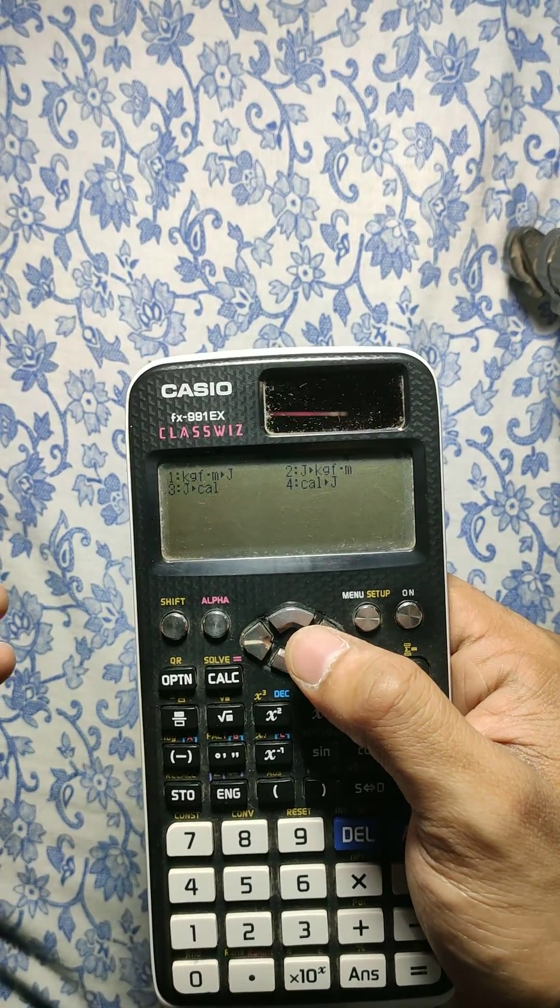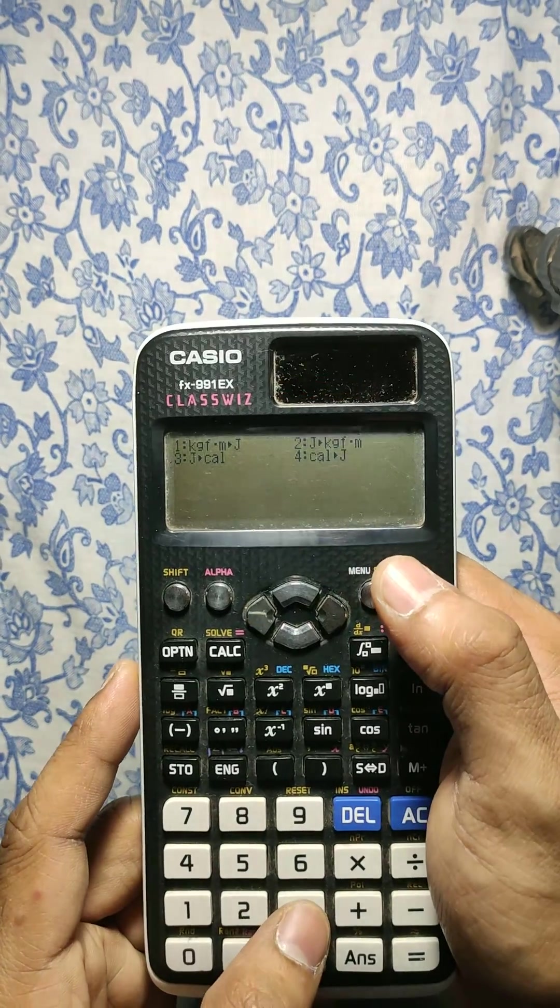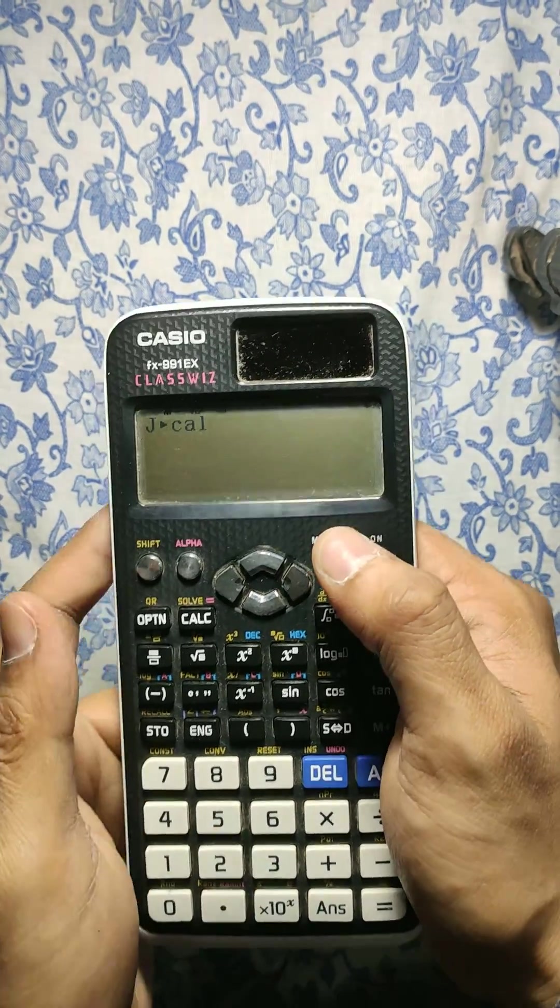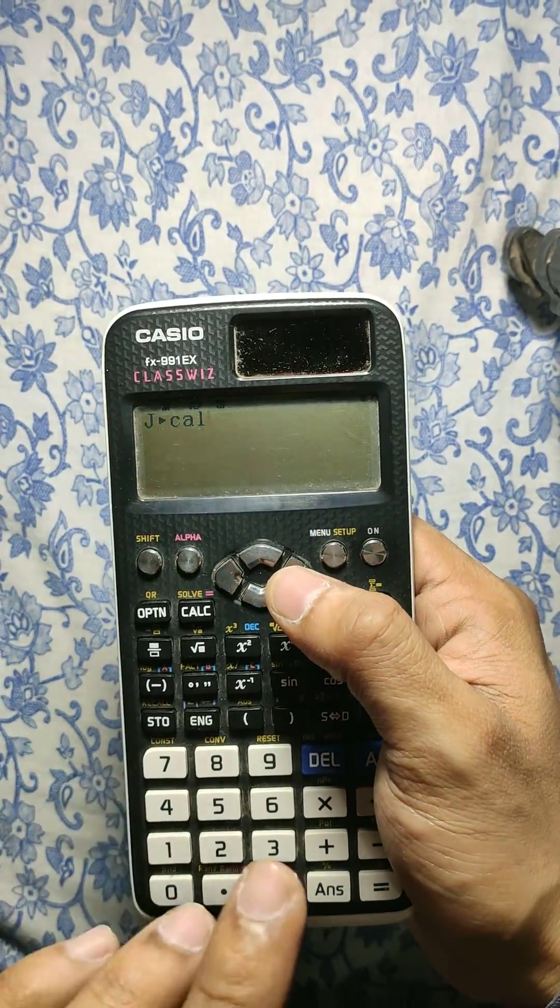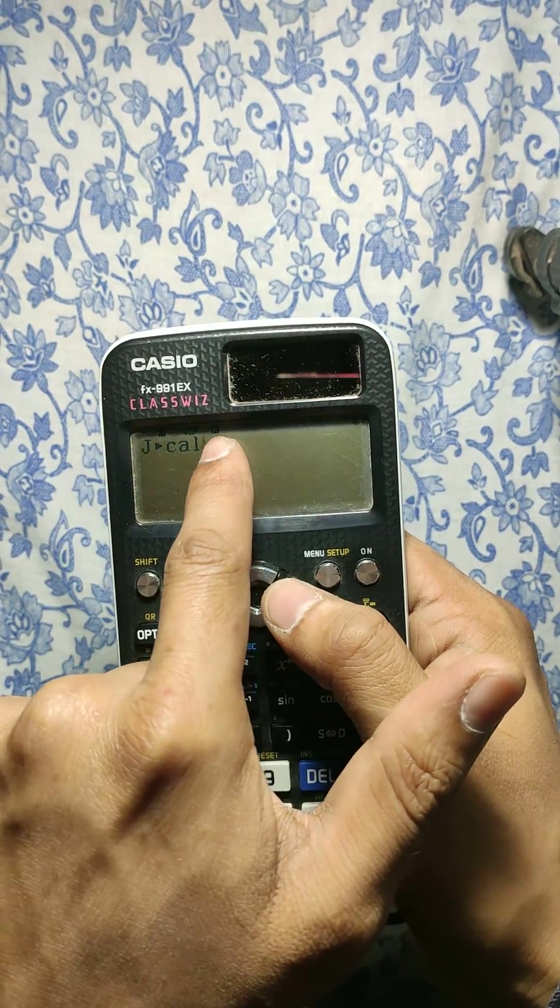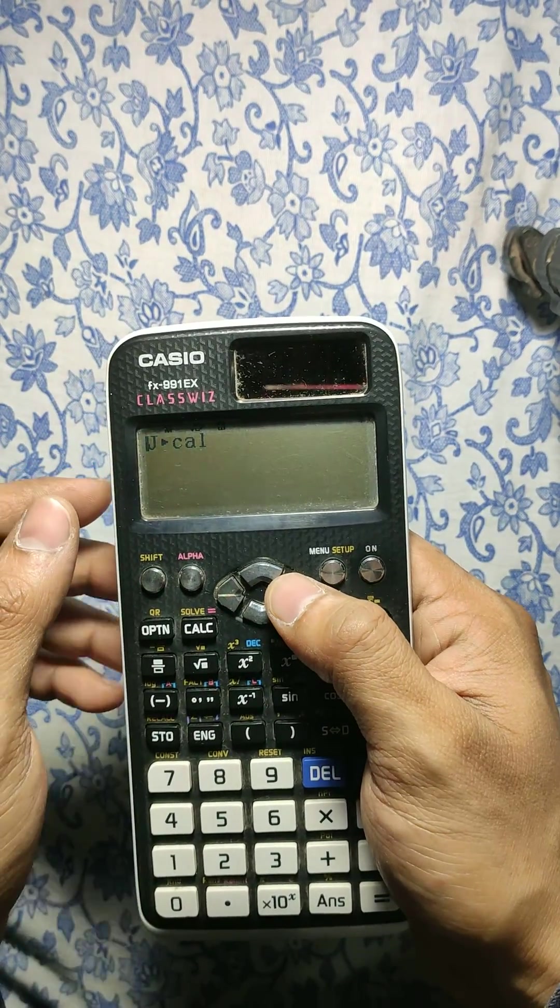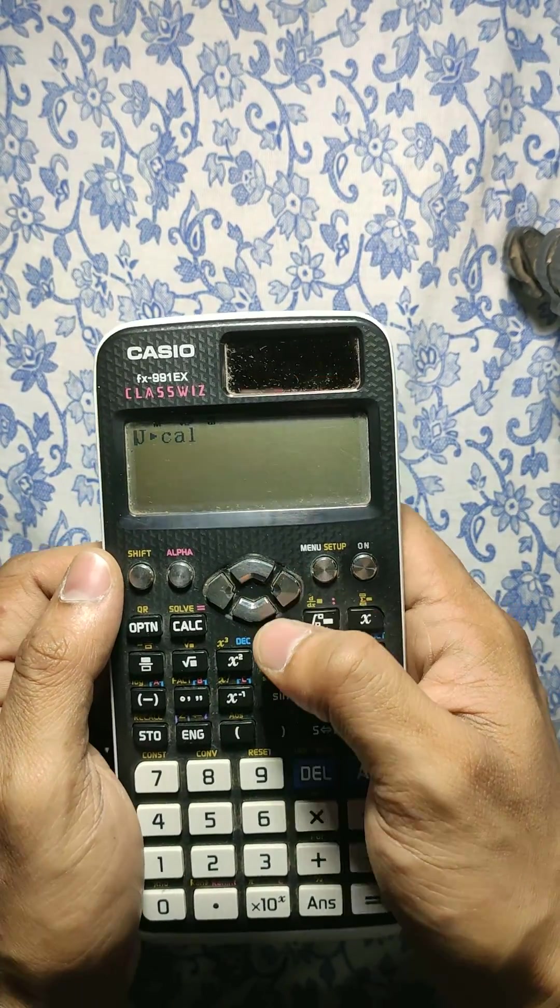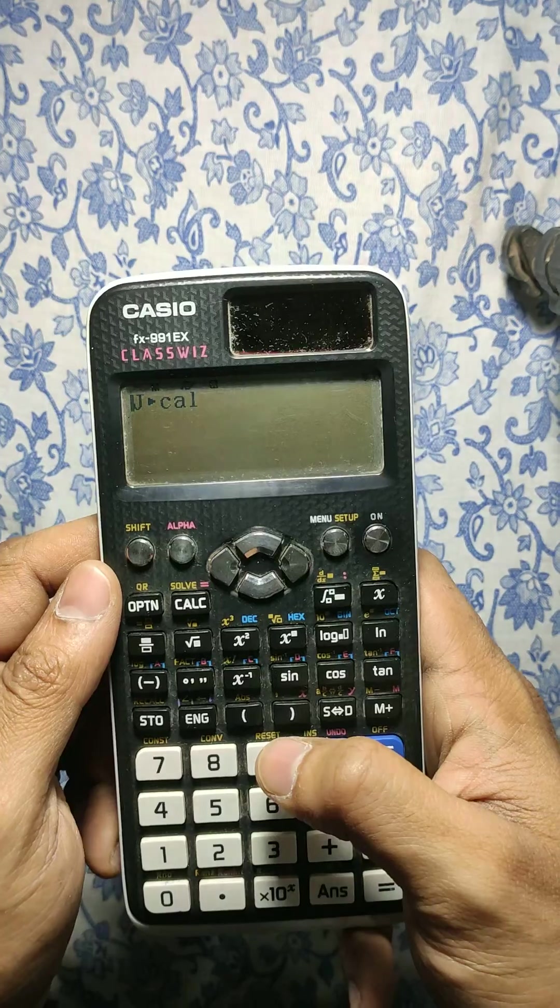Now one thing you have to keep in mind: your input will be here, not here. Okay, so let's say we want to convert 950 joule into calorie. So we input 950 and press equal. Here is your answer.